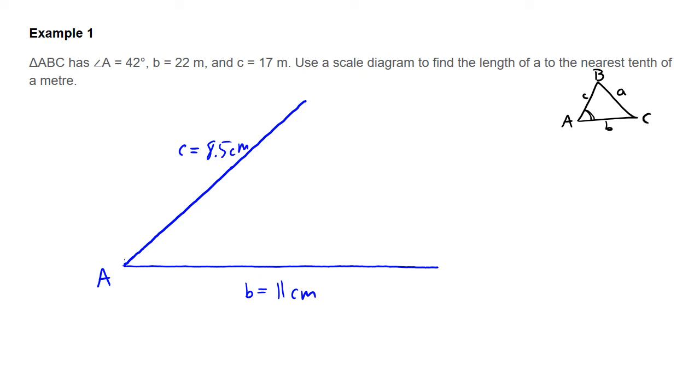Now that I have my angle done and my two sides, I'm ready to find that missing side. I just have to connect those here. And so this is my side length A across from angle A. I just have to measure that side. That's 7.5 centimeters.